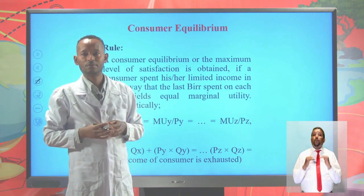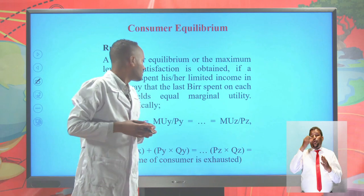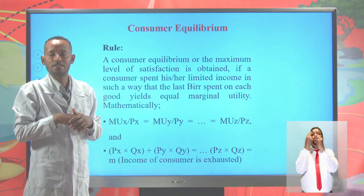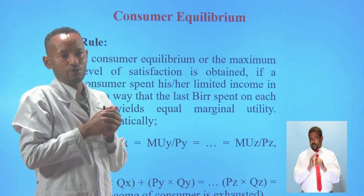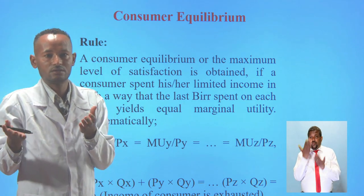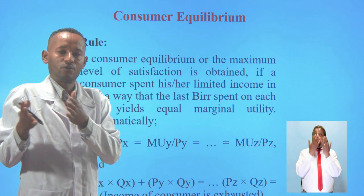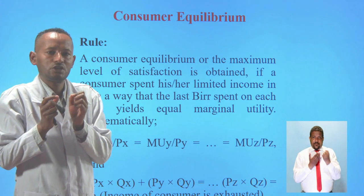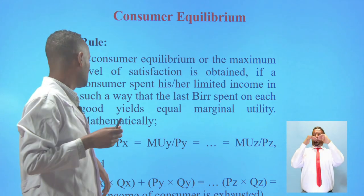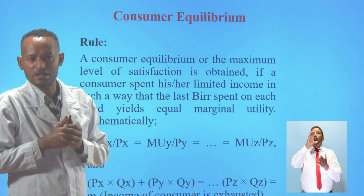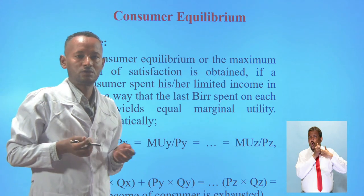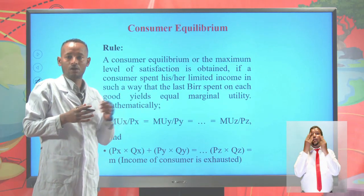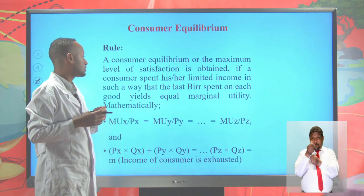Now let's look at consumer equilibrium — which is about maximizing utility. The primary objective of every consumer behind consuming goods and services is maximizing total utility. Using our limited income, how can we maximize utility? The rule of maximizing total utility states that consumer equilibrium is obtained if a consumer spends income such that the last unit spent on each good yields equal marginal utility — that is, MUx/Px = MUy/Py (= MUz/Pz for additional goods).